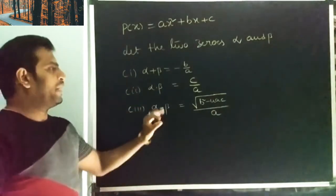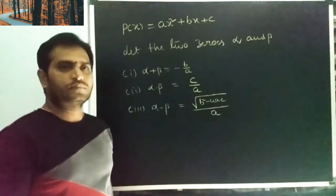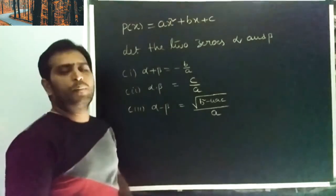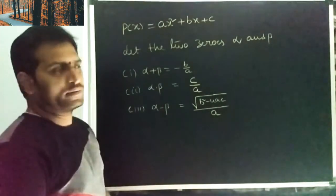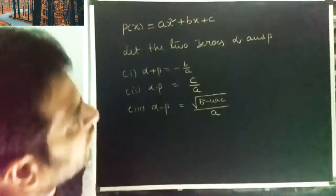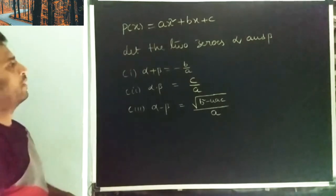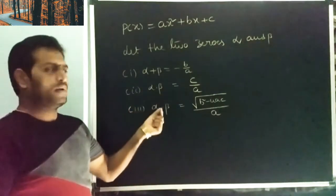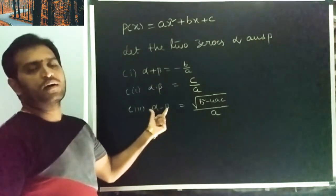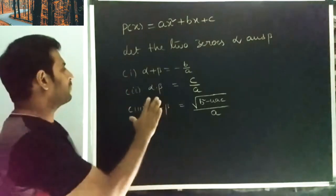This is the formula. There are many formulas — eight different formulas in total. The first three are: sum of the zeroes, product of the zeroes, and difference of the zeroes. Now we derive new formulas from these three.